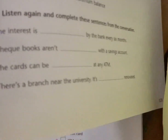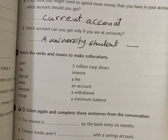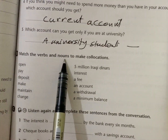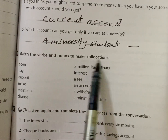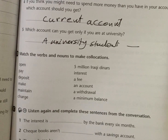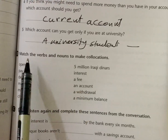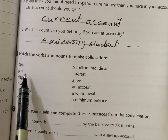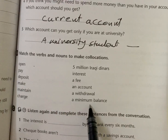طلاب نجي للتمرين التالي — كلش مهم. هذا التمرين من التمارين المهمة جداً. Match the verbs and nouns — وصل الأفعال بالأسماء to make collocations — لعمل متراصفات أو مصفوفات. الكلمات اللي نجدها سوية مع بعض — قد تكون noun+noun، verb+noun، أو adjective+noun. هنا المطلوب verb+noun collocations.